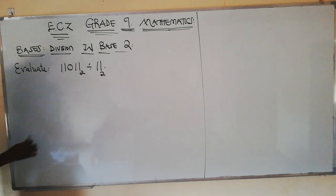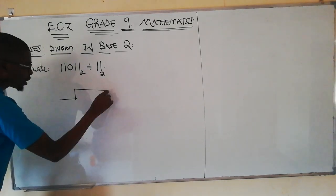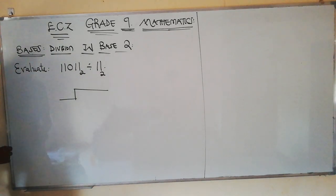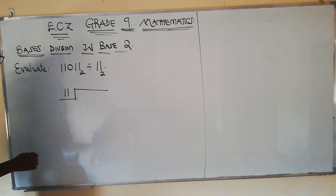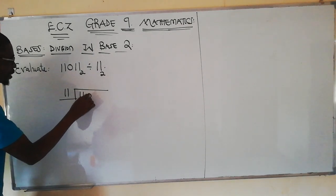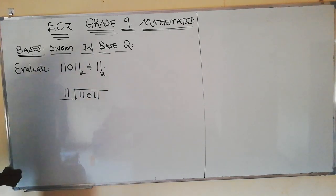Now, let us do the working for this question. We use the usual long division where our divisor is 11 in base 2 and our dividend is 11011 in base 2.